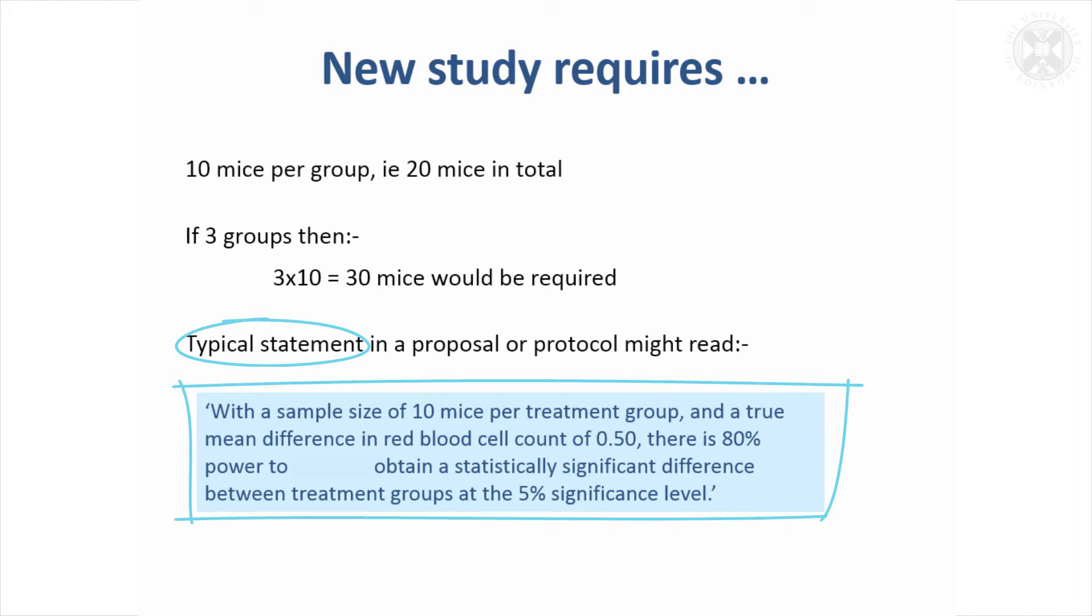A statement a bit like this would be appropriate for that study we've just designed: With a sample size of 10 mice per treatment group and a true mean difference in red blood cell count of 0.5, there is 80% power to obtain a statistically significant difference between the groups at the 5% significance level. So you've said everything that's gone into your power calculation and how you've done it.